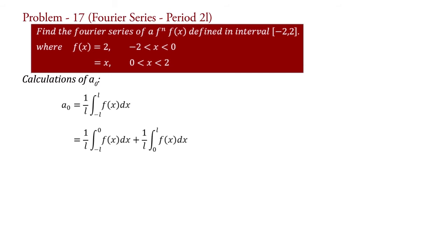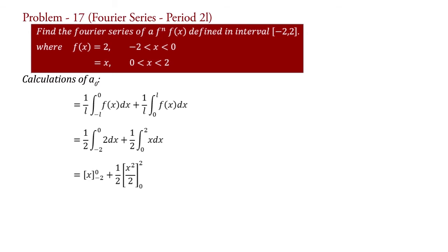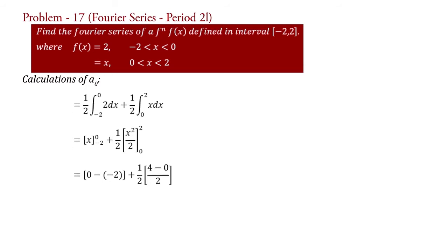Therefore, a0 equal to 1 upon 2 integral minus 2 to 0 of 2 dx plus 1 upon 2 integral 0 to 2 of x dx. The two's cancel. Integrating: a0 equal to x with limit minus 2 to 0 plus 1 upon 2 into x squared by 2 with limit 0 to 2. Substituting the limits: a0 equal to (0 minus minus 2) plus 1 upon 2 into (4 minus 0) upon 2. That is a0 equal to 2 plus 1 equal to 3. This is the value of a0.